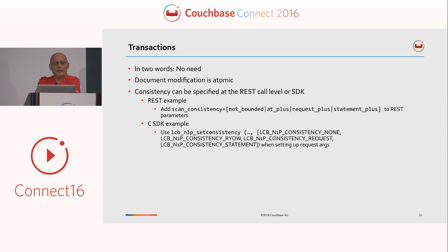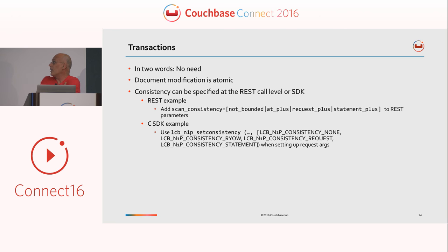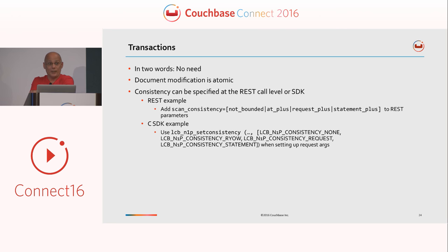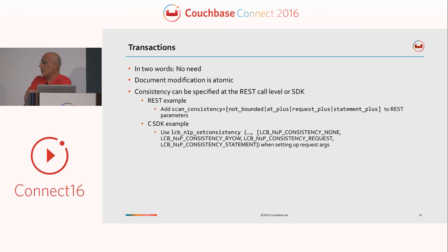Transactions: since you have denormalized your schema completely, all of the information will most likely reside in a single document, and document modification is atomic. Most of the time, you don't actually need transactions as such. What you're interested in is consistency — once you've written or modified something, you may care about reading it back, or reading data that is completely consistent. You can set the consistency level at the REST API level through the scan_consistency REST parameter, or if you're using an SDK, you can set it from the Couchbase library.